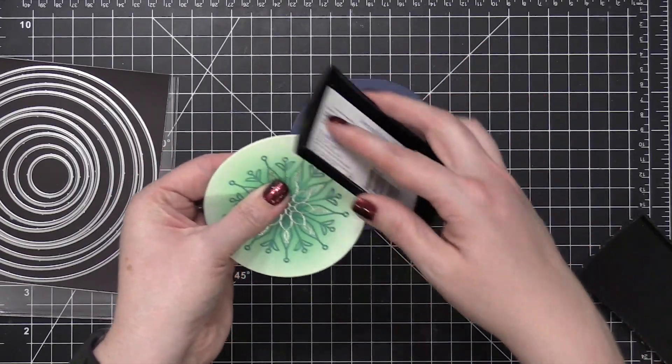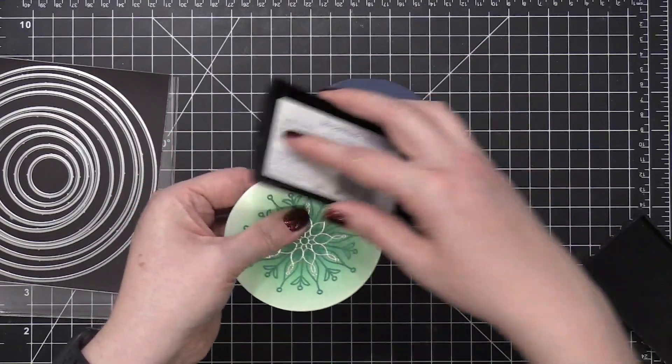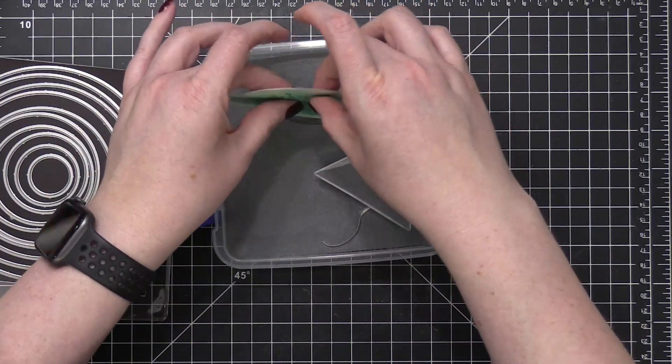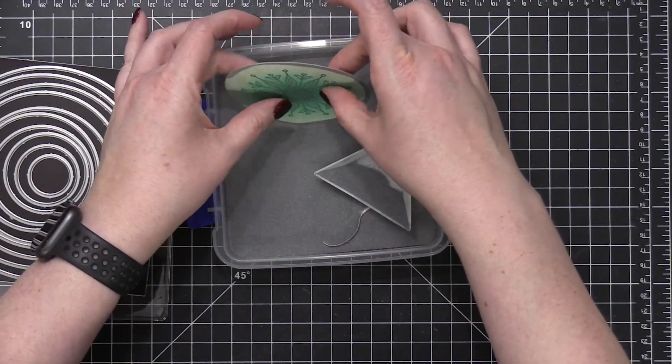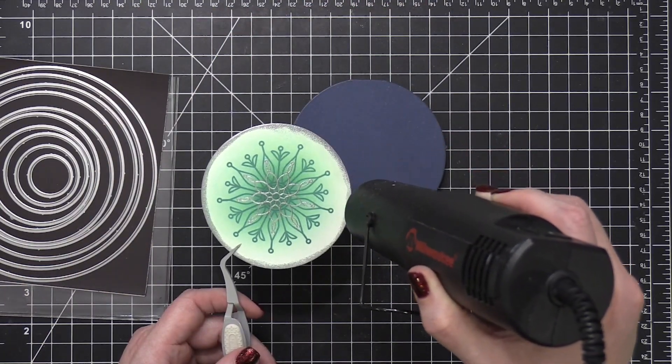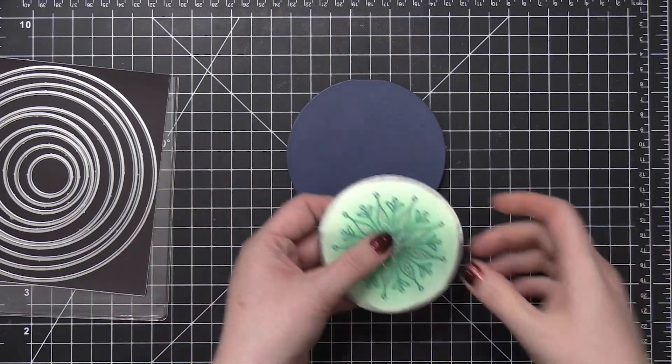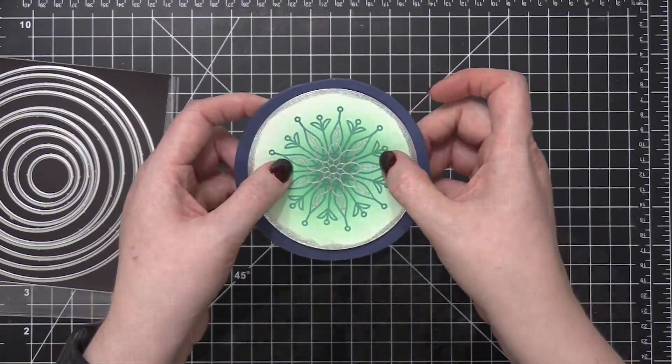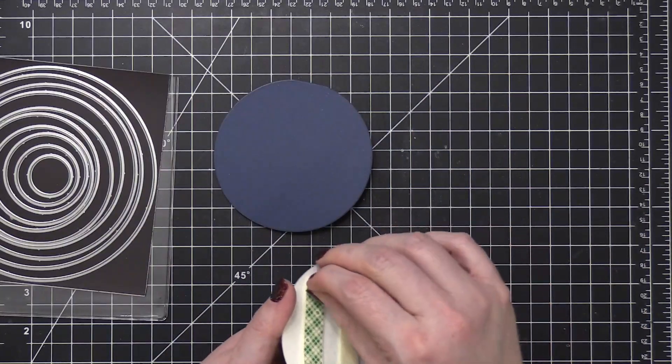For my stamped piece, I ran my VersaMark ink pad along the edges of that circle. And then I dipped the edges into that embossing powder once again. This is going to give sort of a rustic silver edge to the outside of my circle piece. After I heat set that, I put this stamped piece on some foam adhesive and then put that directly onto my card base.